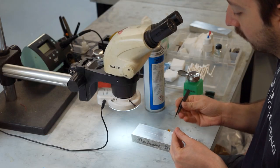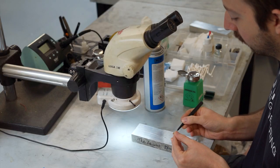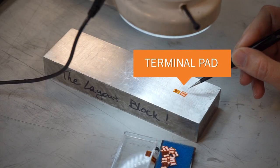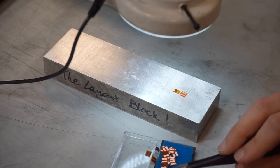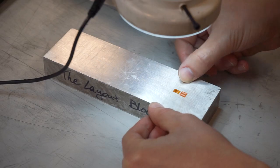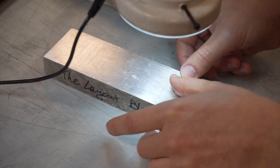Using tweezers, remove the strain gauge from its envelope and set it on the layout block. Position a terminal pad beneath the gauge. Finally, remove a strip of cellophane tape and press down firmly over the gauge and terminal pad.